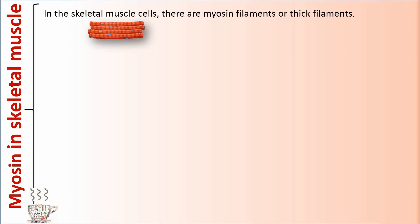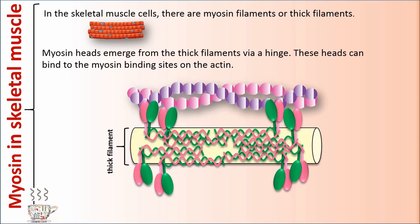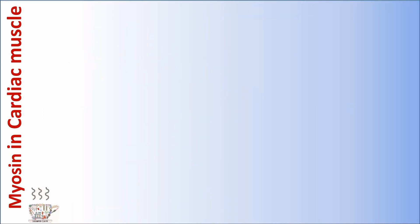Myosin in skeletal muscle. In the skeletal muscle cells, there are myosin filaments or thick filaments. Myosin heads emerge from the thick filaments via a hinge. These heads can bind to the myosin binding sites on the actin. Model of contraction is a sliding filament model. I will explain about skeletal muscle contraction in another video.